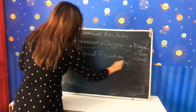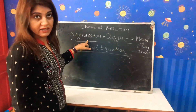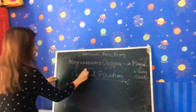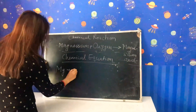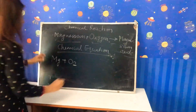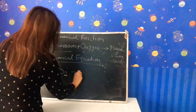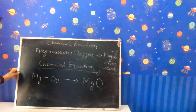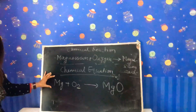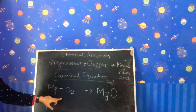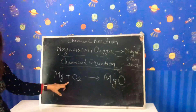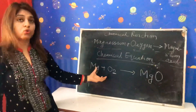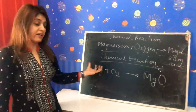In ninth class, you have learned all these symbols. Magnesium is written as Mg. Plus oxygen — oxygen is a gas coming from the air, so its symbol is O₂. And magnesium oxide has the symbol MgO. So this is the chemical equation which represents the chemical reaction. It is the shortest symbolic form, and it is very convenient and easy to write.